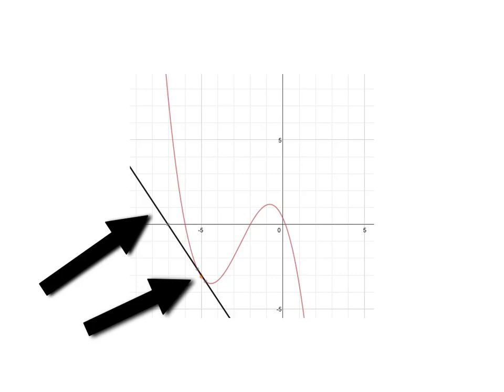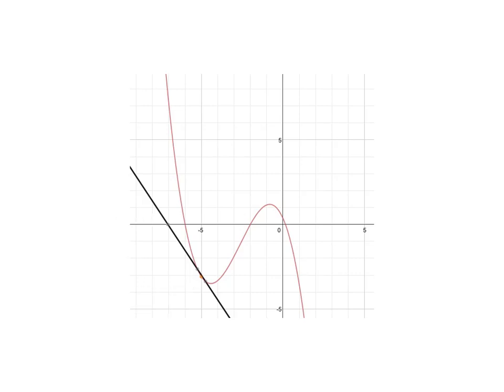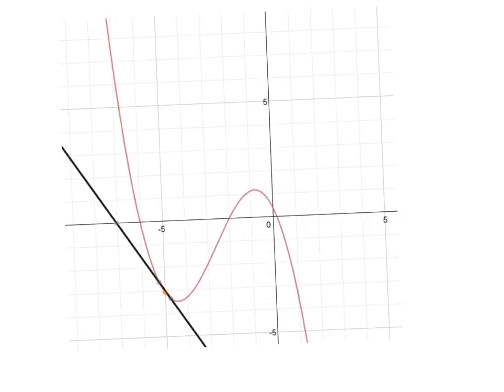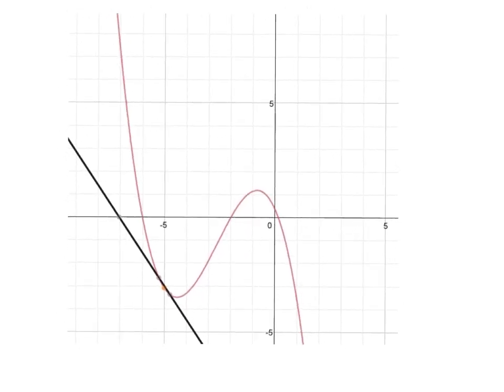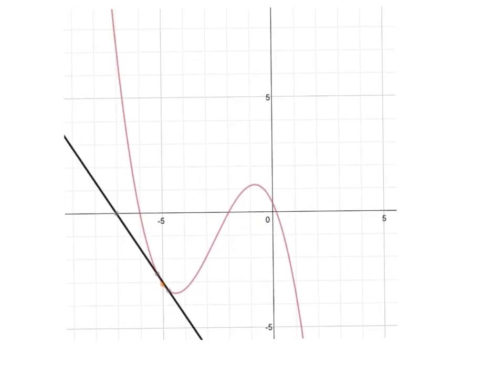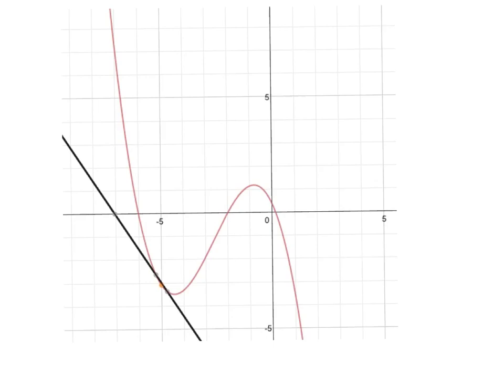Think about whether the slope of this tangent line is positive or negative and what that might mean about our original function. And then you might think about what the previous tangent line was in terms of its slope. Was it positive or negative? Was it close to zero? Was it far away from zero? Those are things you think about when you draw tangent lines.